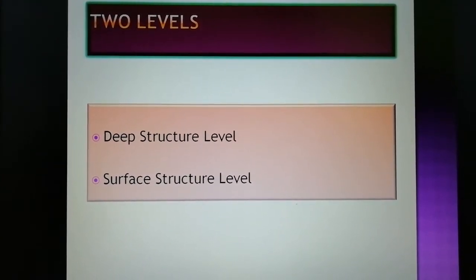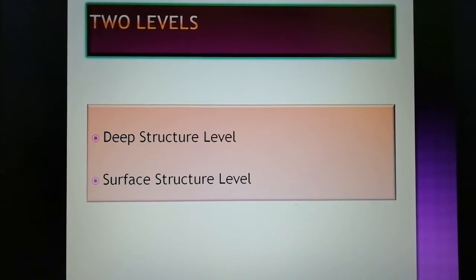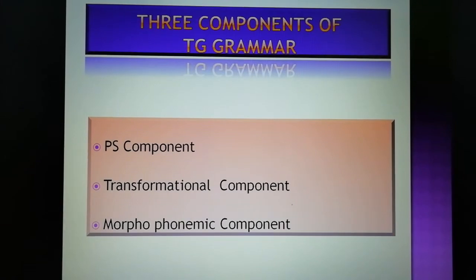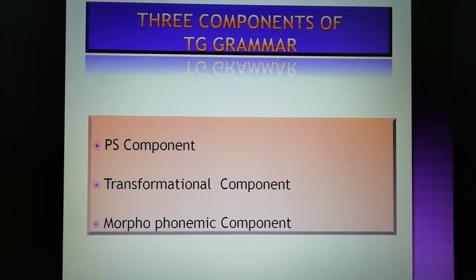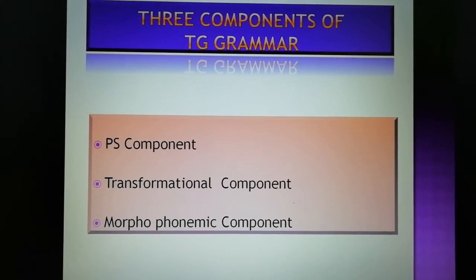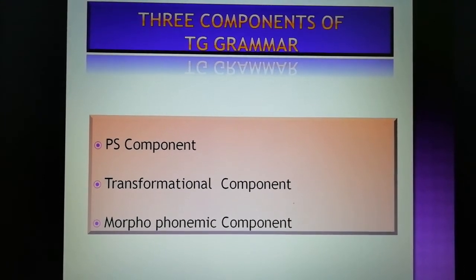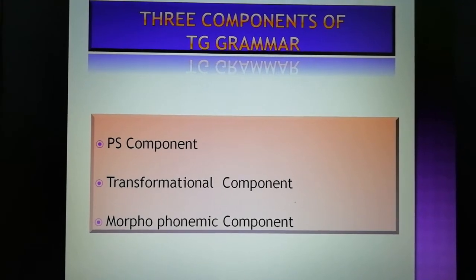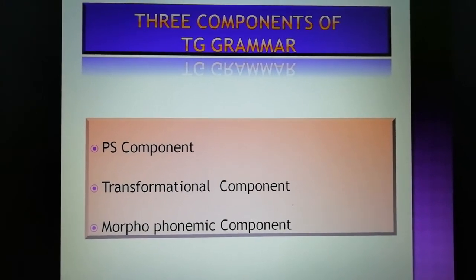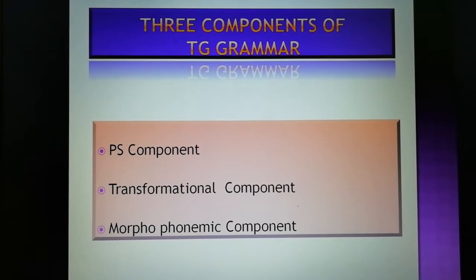Chomsky also explained the three components of TG grammar: the phrase structure component or PS component, the transformation component, and the morphophonemic component. The process of transformation begins with labeled phrase structure grammar. A deep structure is converted to a surface structure. For this, Chomsky adopted IC analysis of kernel sentences.